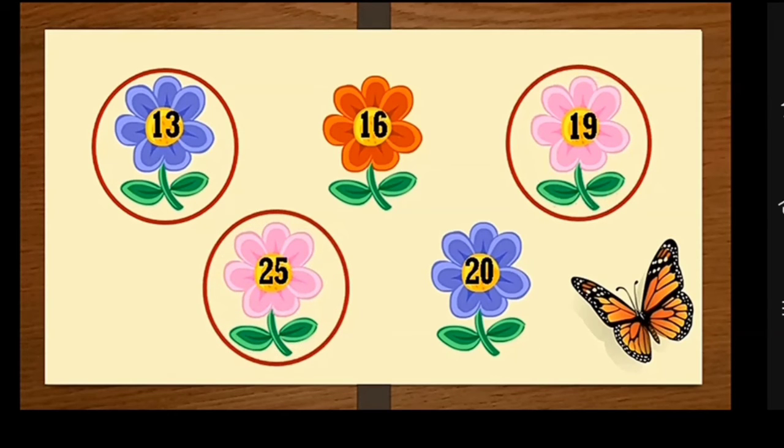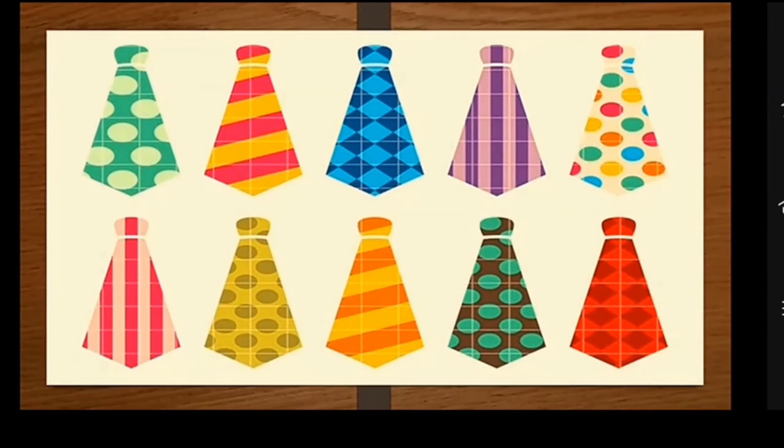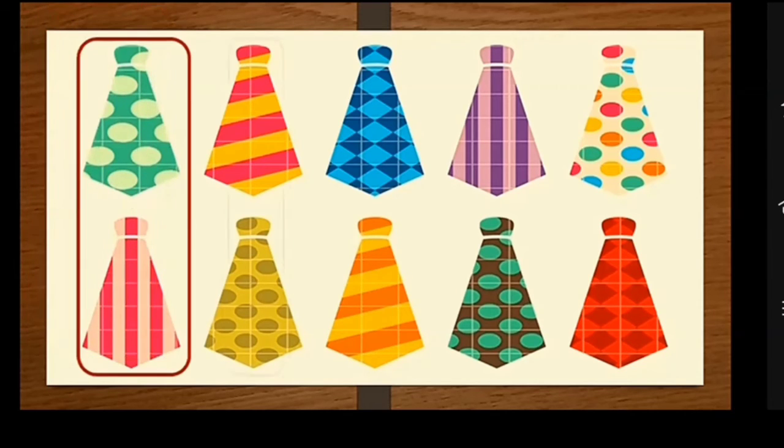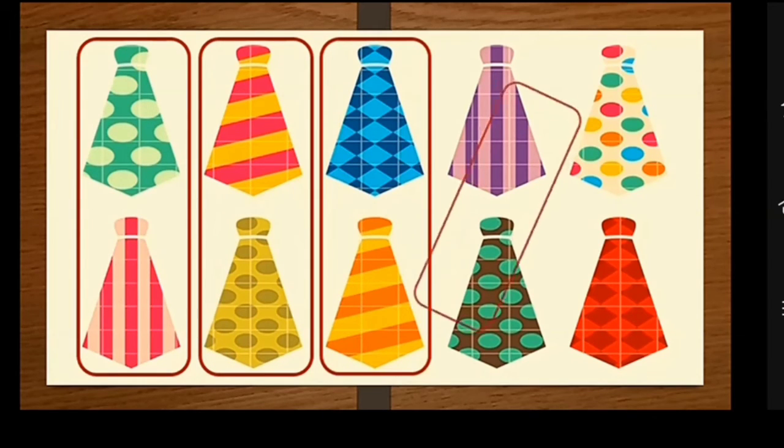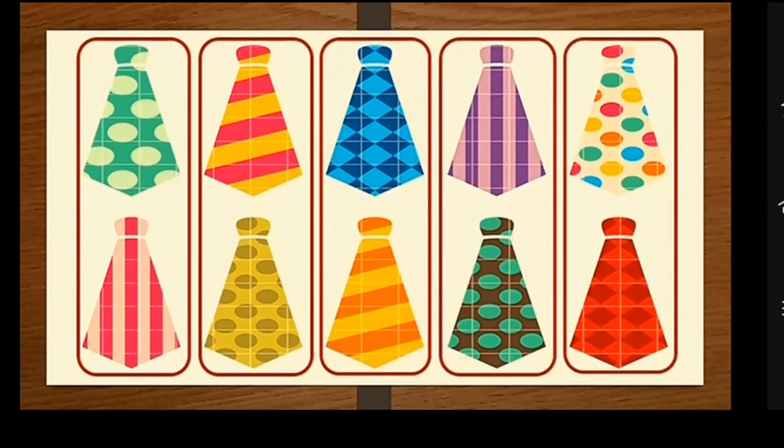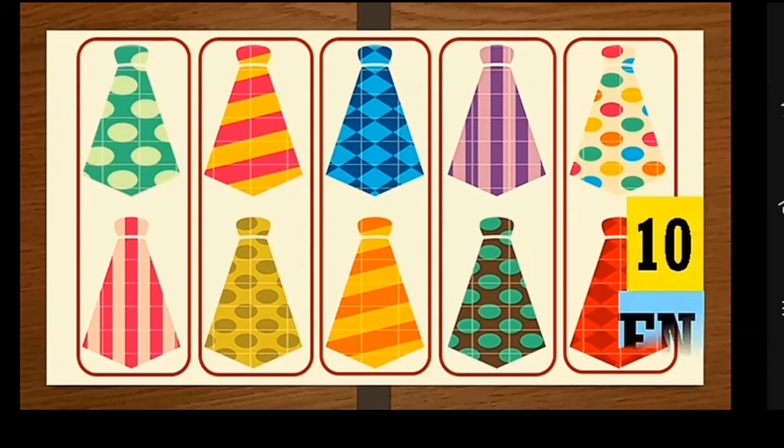Here we see some colorful ties. Children, let's try to pair them into two. One, two, three, four, five. As we are able to evenly group them by two, ten is an even number.